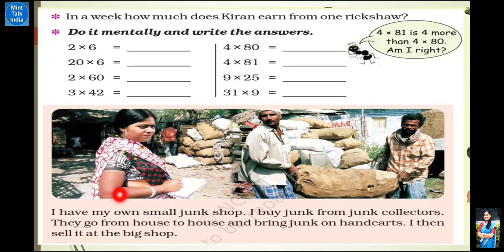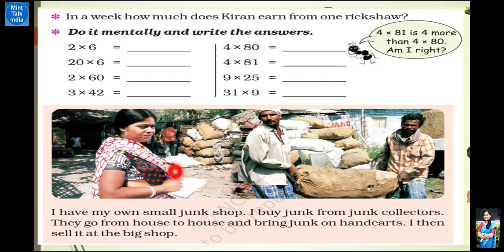Kiran says: I have my own small junk shop now. I buy junk from the junk collectors. They go from house to house and bring junk on hand carts. Hariya and Babu are the same kind of junk collectors — they go from house to house and buy junk. Then they sell the junk to Kiran at the junk shop. They also earn money this way.